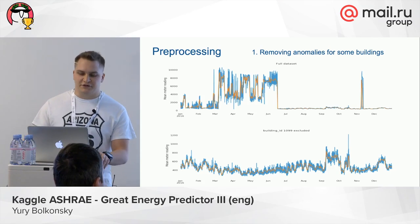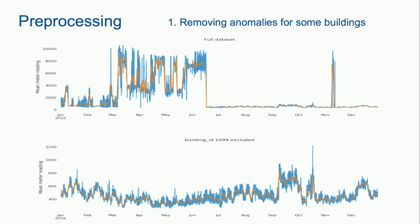I will start with the pre-processing of the data, because it was the main part of the solution for this competition. The data was quite tricky and we needed to handle it to get good results. The first step was to remove anomalies for some buildings. As you can see in the first graph, the full dataset has a lot of unusual peaks. For example, if we remove building 1099 — which I think had bad data, maybe some problem with the metadata or bugs with the meters — the dataset becomes better, as seen in the second graph.